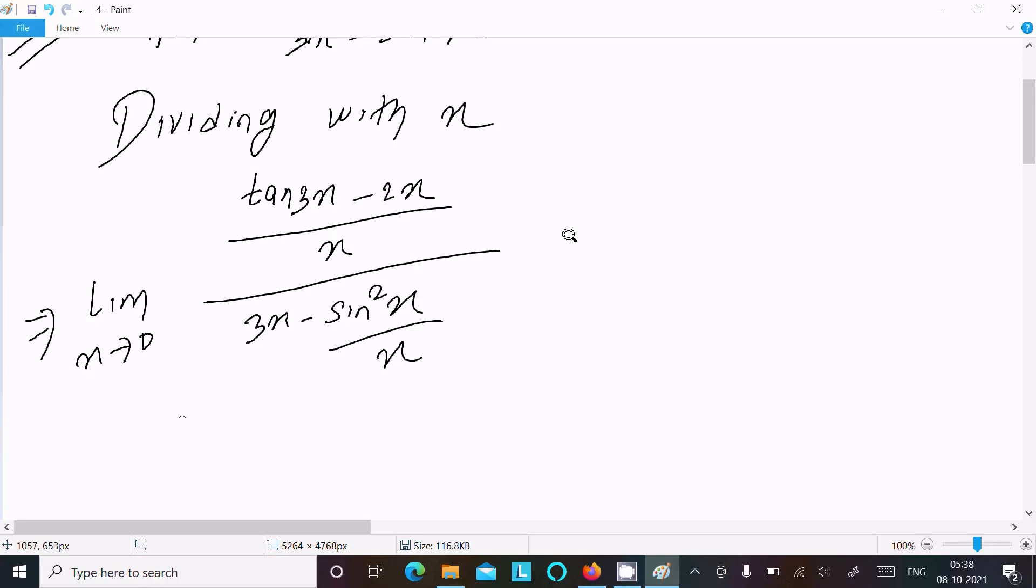After that, here we can write tan 3x by x minus 2x by x, limit x tends to 0. This here 3x by x, and here sin x by x into sin x. Sin squared x we can write as sin x by x times sin x, so this x cancels, here x cancels.